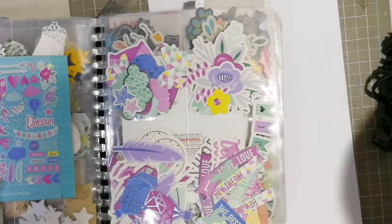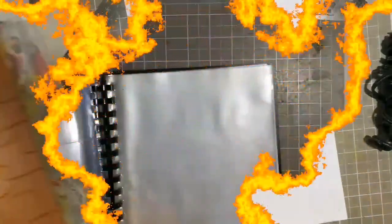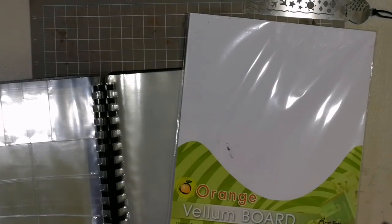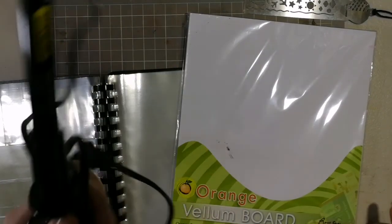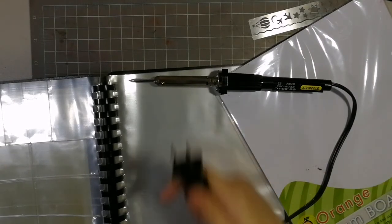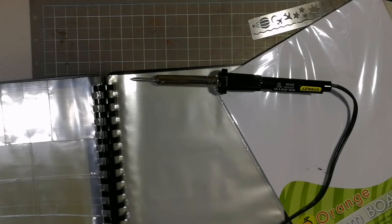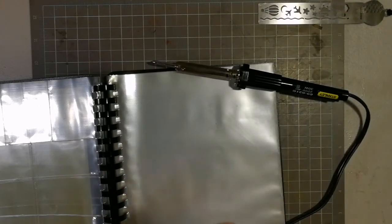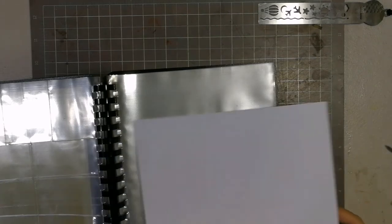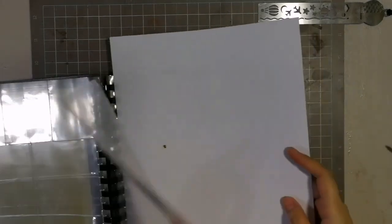Let's get started. Open your clear book to the page you want to work on, then grab your fuse tool or soldering iron. Plug in your soldering iron and wait for it to heat up. Make sure to set your soldering iron aside while waiting so you don't melt the other pages.